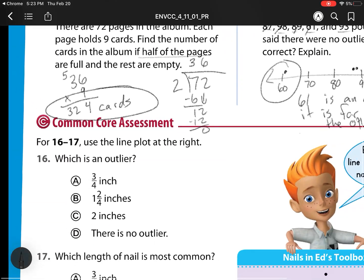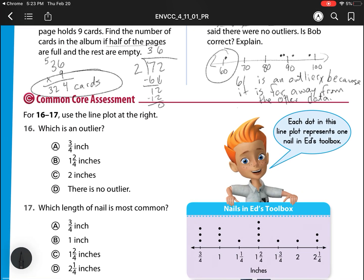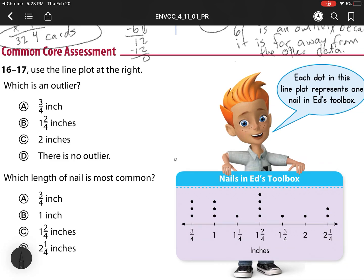So now on to our question 16. So I'm going to use this over here. So what is this? Well, remember, I'm going to say each dot. He's telling me each dot right here is one nail. So each dot is a nail in a toolbox. Which is an outlier? So I'm looking for which one is not close to an outlier or is not close to the other. Well, I see all of these dots are close to each other. So there actually is no outlier for this one. They're all close to each other. They're not far away from each other. Which one is the most common? So which one has the most dots? Well, that is this middle one right here, one and two fours, which is C.